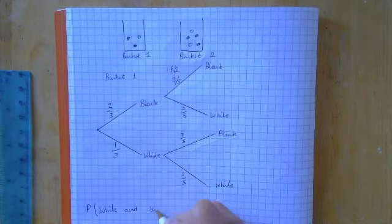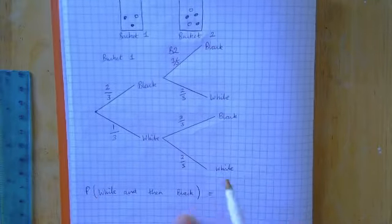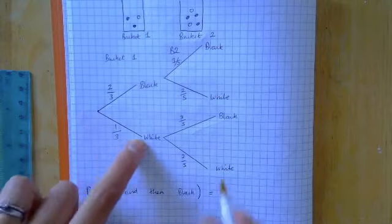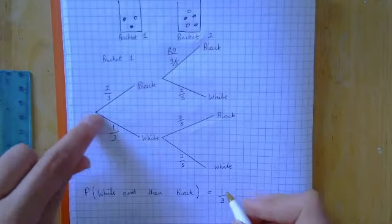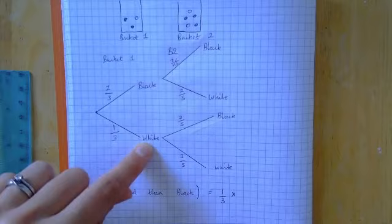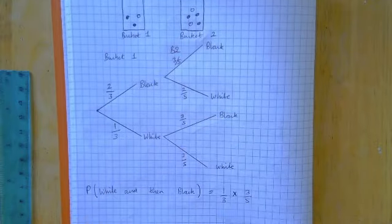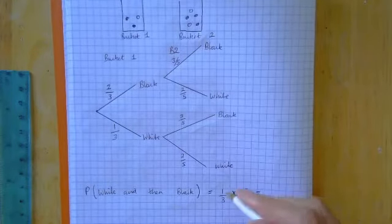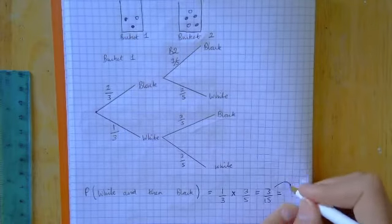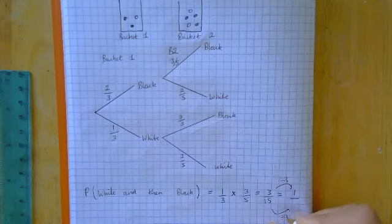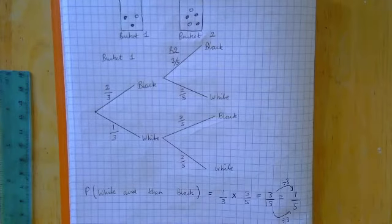They could ask: what's the probability of getting a white and then a black? We want a white first, so we walk along the white branch — that's one over three. The only rule is we multiply along the branches, so one over three multiplied by three over five. Multiply the top numbers: one times three is three. Multiply the bottom numbers: three times five is fifteen, giving three over fifteen. Simplify by dividing top and bottom by three, giving one over five.